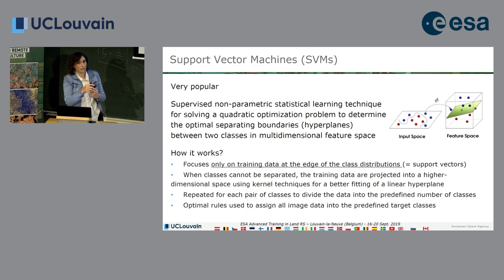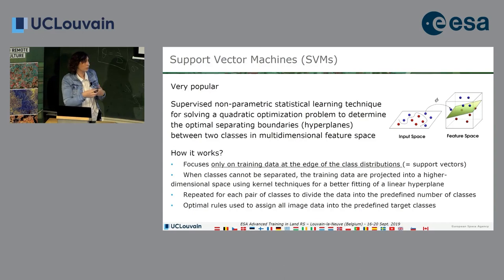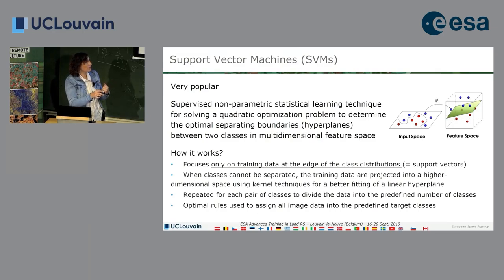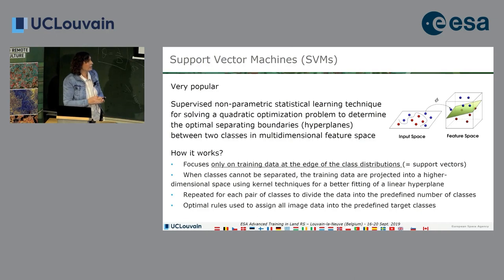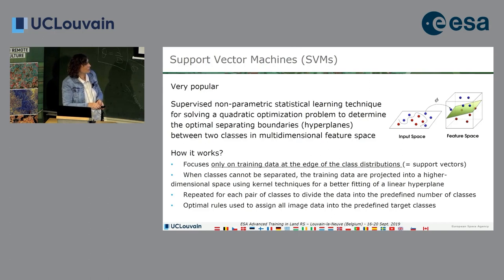This boundary, based on the training dataset, is then used to classify all the pixels of your images. If it is not able to draw a good boundary, it will increase the dimensionality of the space using a kernel technique and work on what they call a hyperplane, because the number of dimensions can increase a lot. At the end, you always have a boundary that discriminates between the land cover classes.